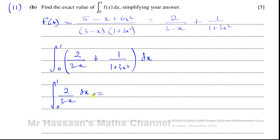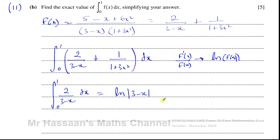This first part is straightforward: if I differentiate the denominator I get a constant, and the numerator is also a constant. So this is the result of the chain rule — whenever the numerator is of the form of the differential of the denominator, it integrates to something involving ln of the denominator. I put ln of the modulus of (3 − x), then divide by the differential of what's inside, which is −1, evaluated between limits 1 and 0.